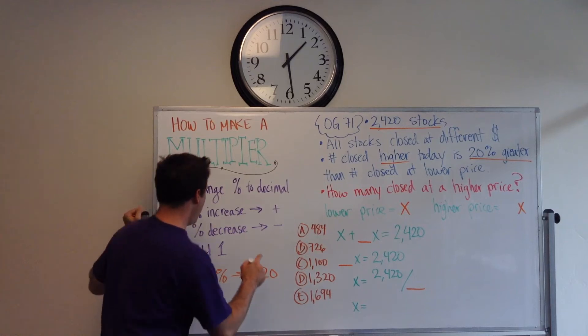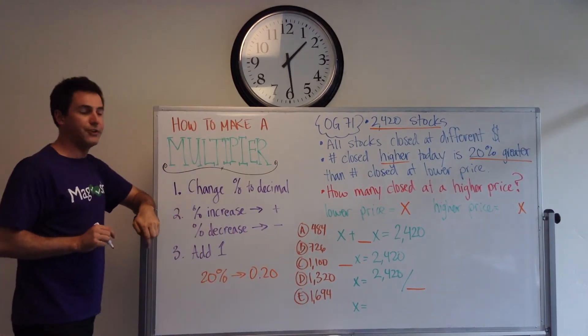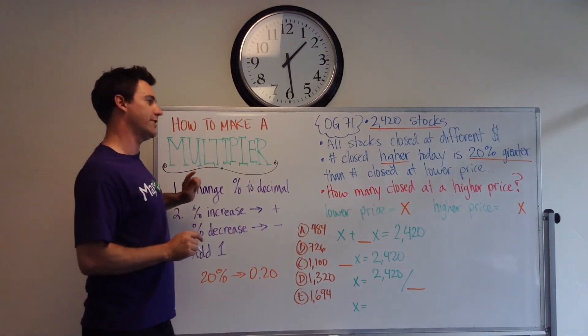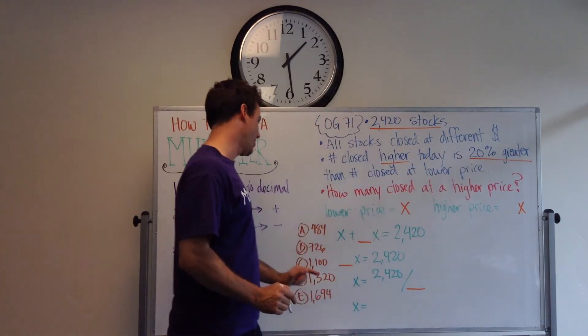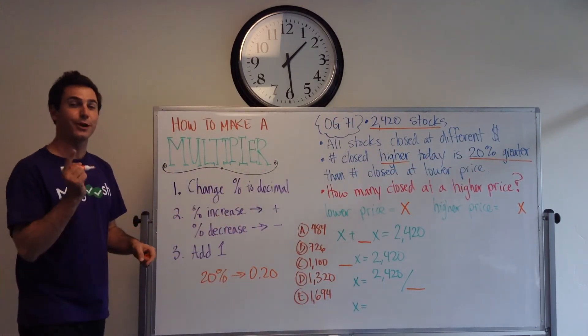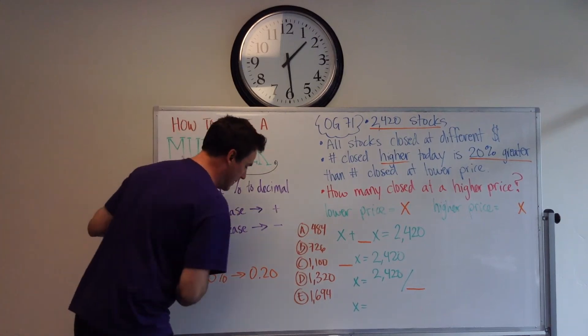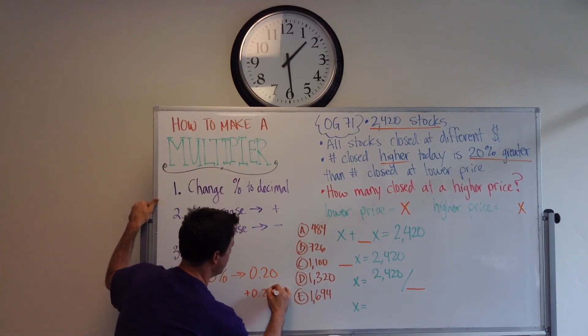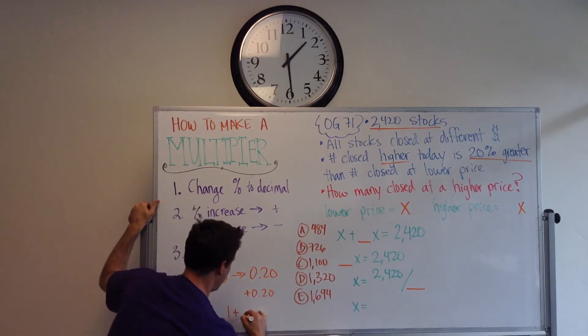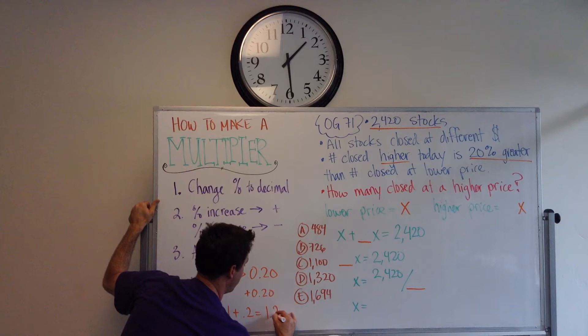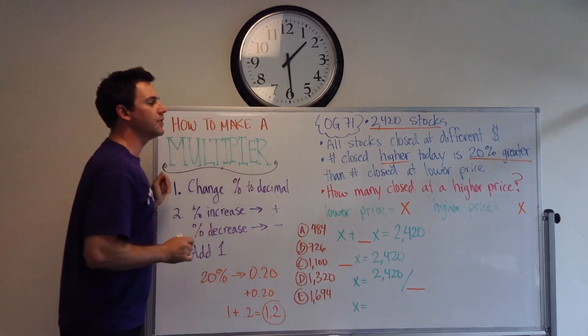Now, step two. Is it a percent increase or percent decrease? Well, it says greater. Greater is synonymous with increase. So, we're going to keep it positive. Plus 0.20. And then, finally, we add 1. So, 1 plus 0.2 equals 1.2. That is our multiplier.